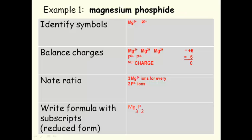Let's look at an example. Magnesium phosphide. The first thing you need to do is look up both magnesium and phosphorus in the periodic table and write down their ion charges. Magnesium 2+, and phosphorus, or the phosphide ion, P3-.